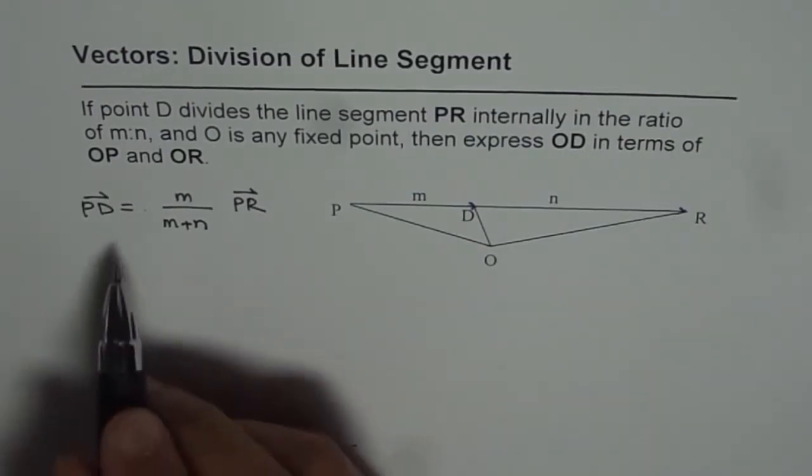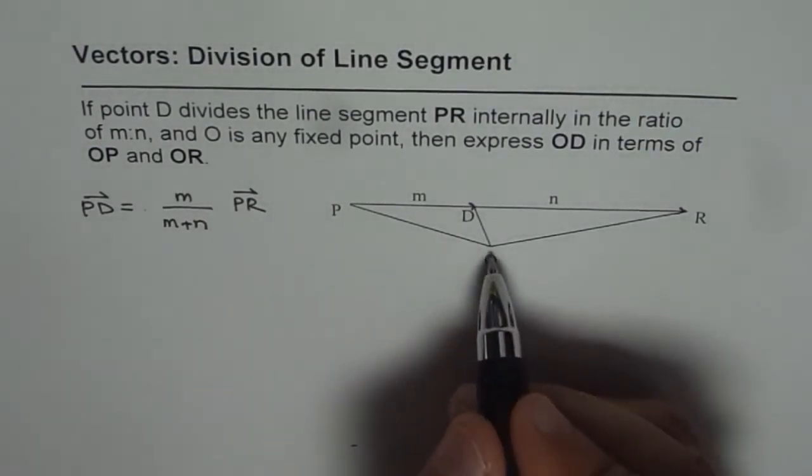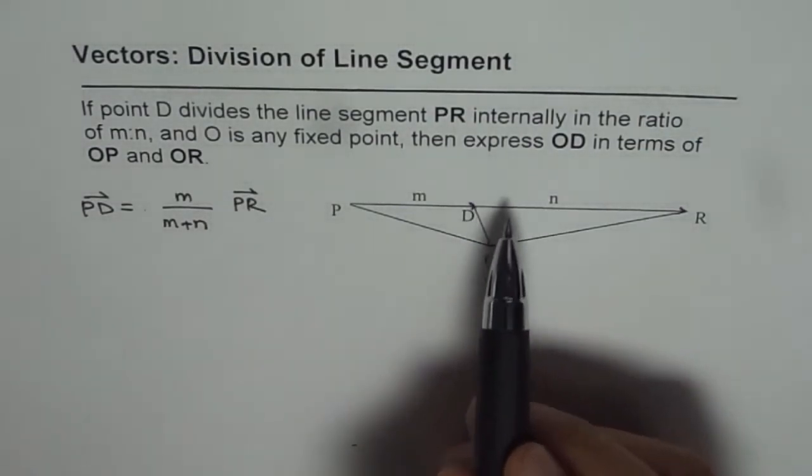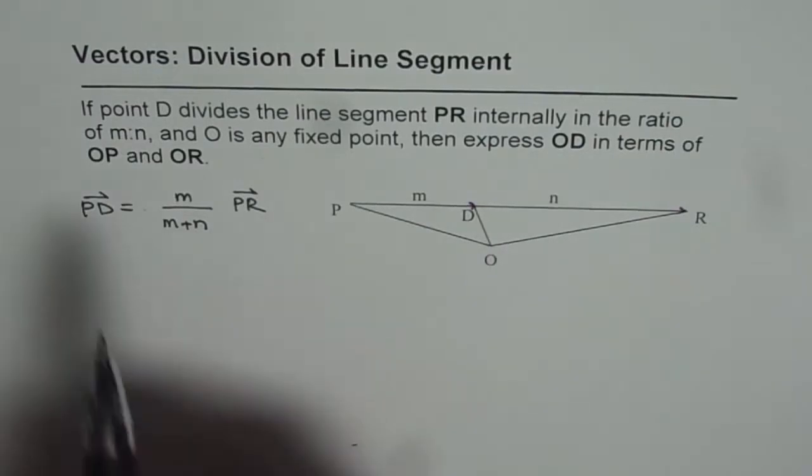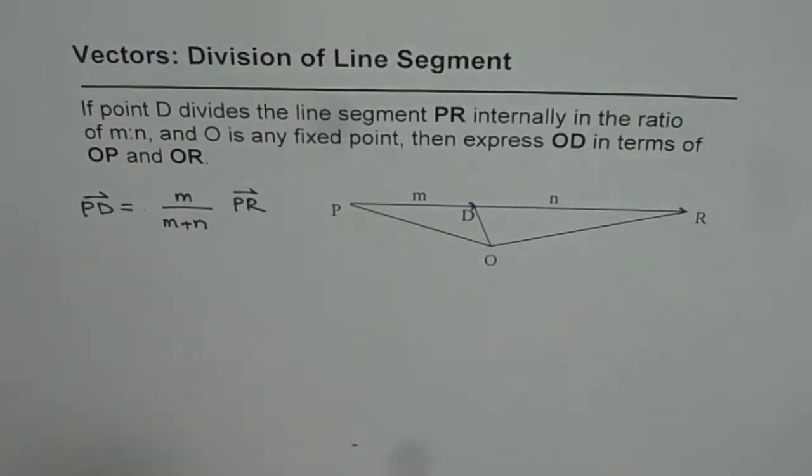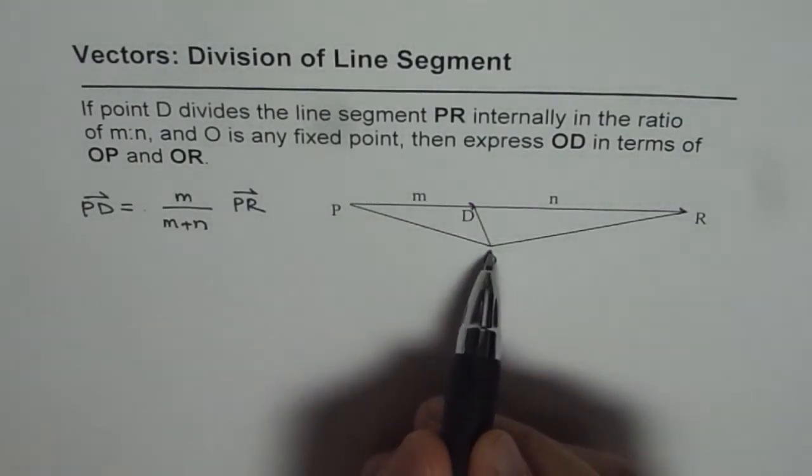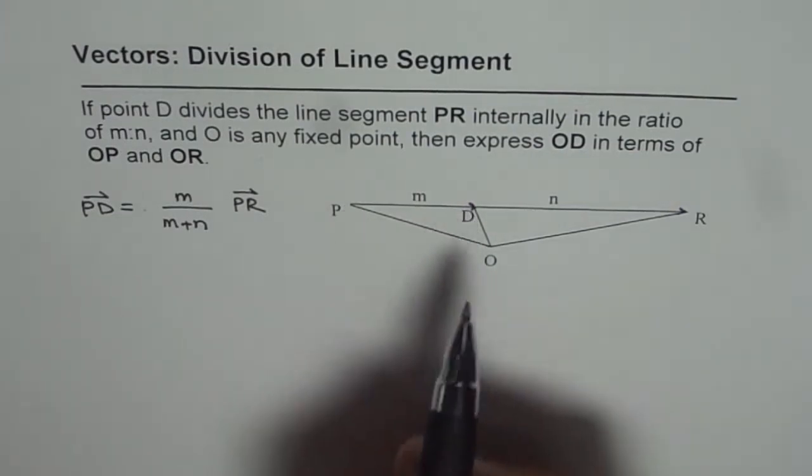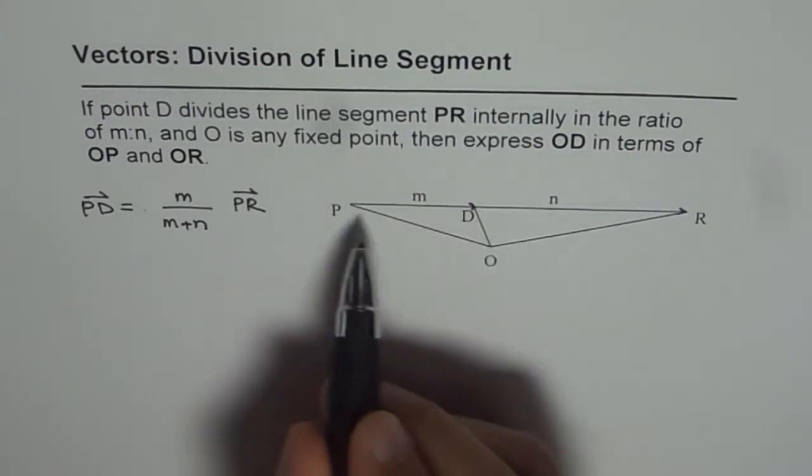Now we will try to relate PD and PR with OD since we want to express the relation between OD and OP and OR. Now PD in terms of OD will be OD minus OP.